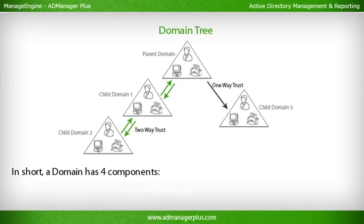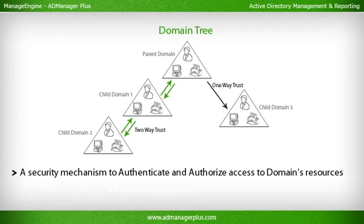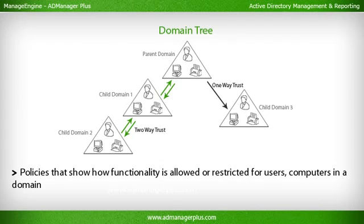In short, a domain has four components: a hierarchical structure of containers and objects; a unique domain name; a security mechanism to authenticate and authorize access to the domain's resources; and policies that define how functionality is allowed or restricted for users and computers in a domain.